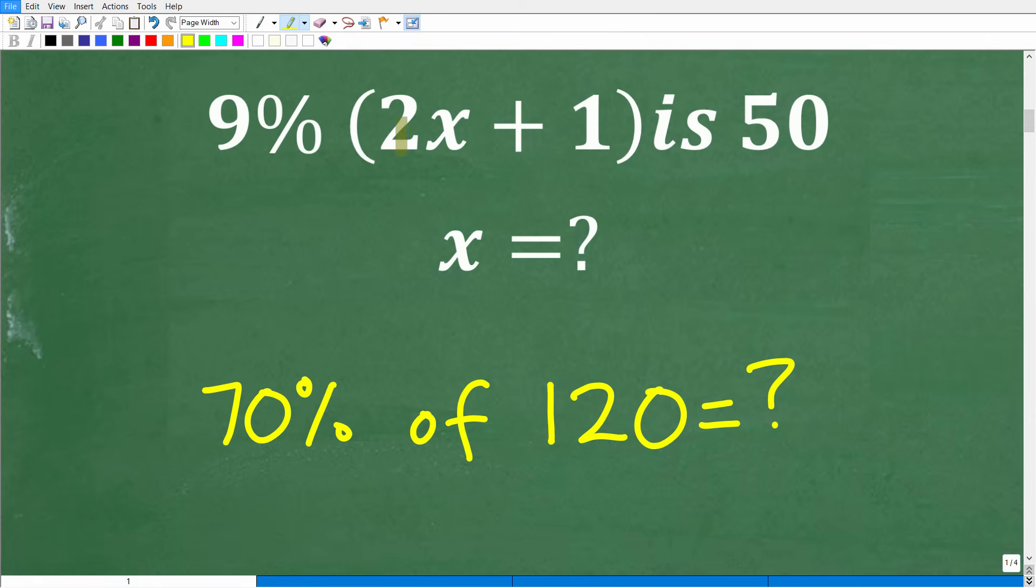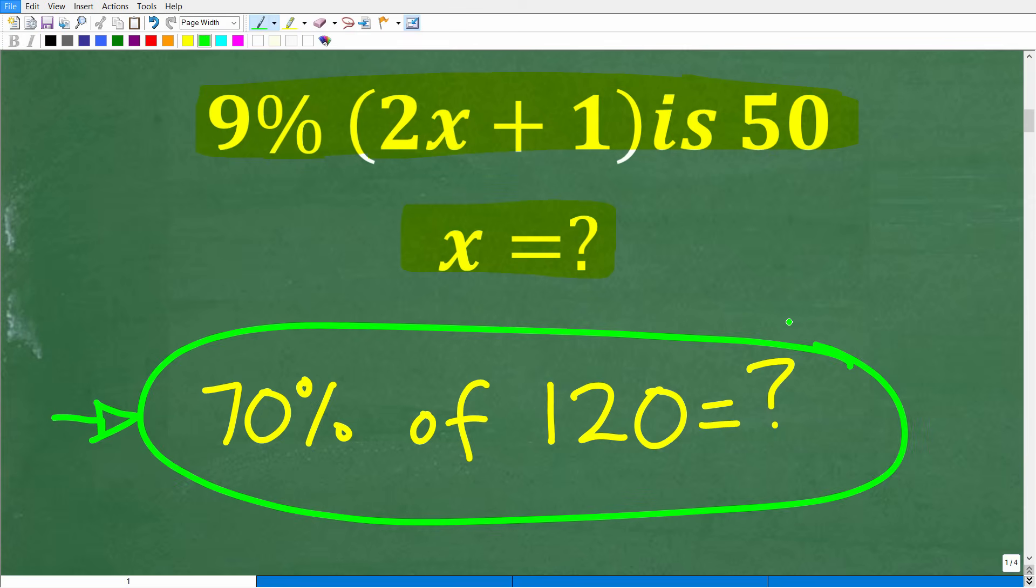We have 9% of some number is 50. We'll get back to the actual problem here in just one second. But let's do a quick pop quiz, and let's see if you can solve this problem. 70% of 120 is equal to what? How do you find the percent of a number?